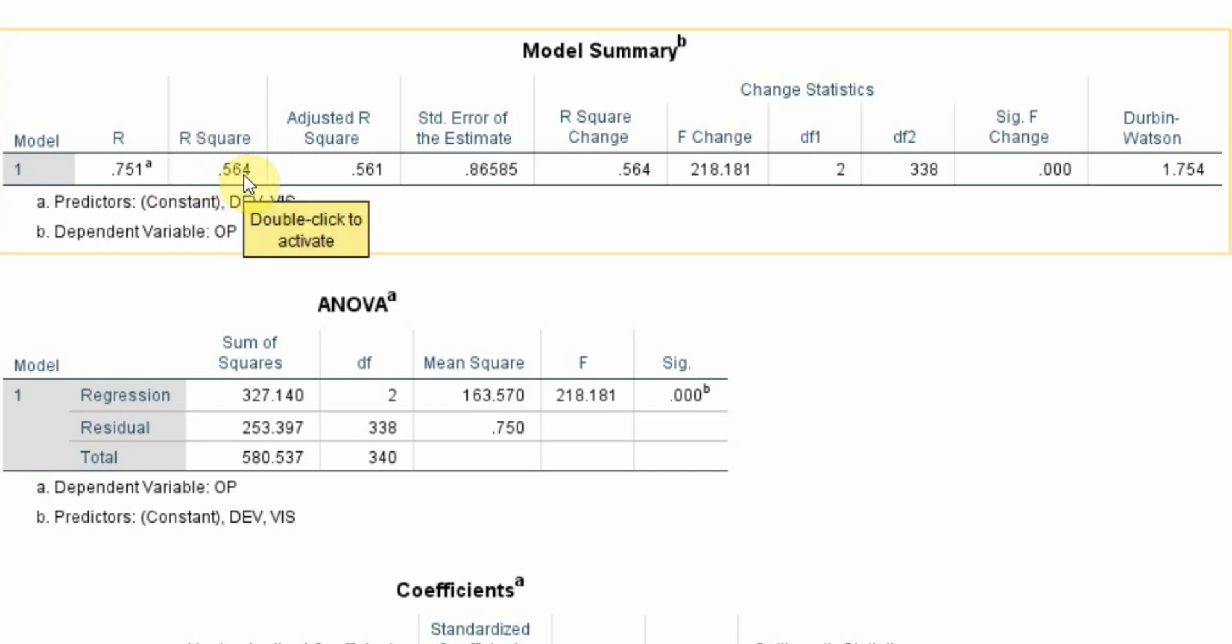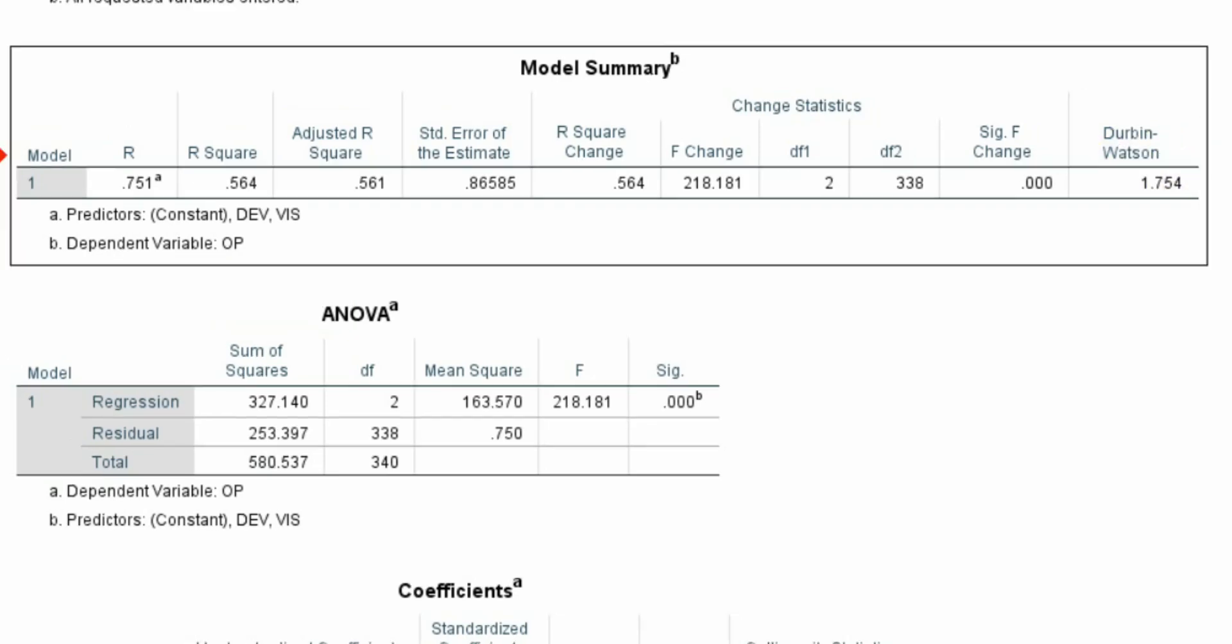This shows that 56.4 percent - if you multiply it with 100 you will have the percentage - 56.4 percent change in organizational performance is being explained by development and vision. F-square change is significant. Durbin-Watson less than 2.5, so there is no autocorrelation issue.